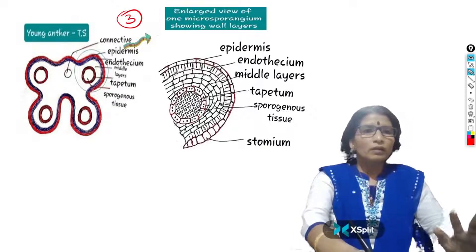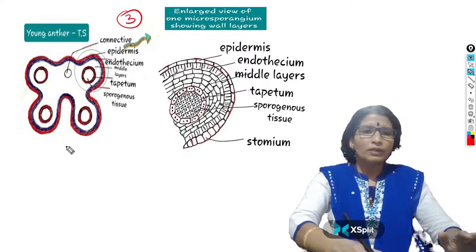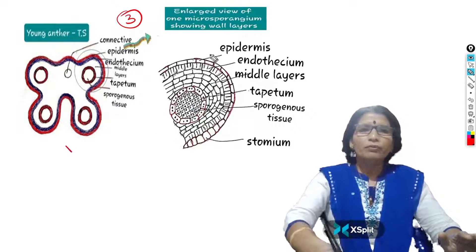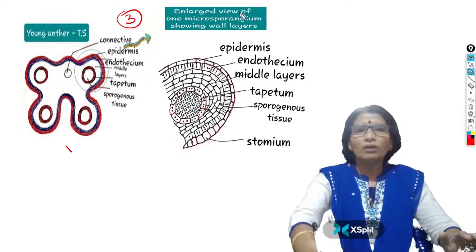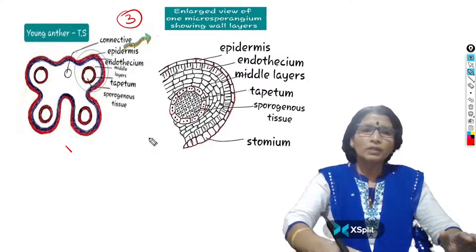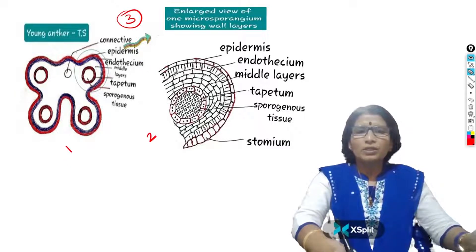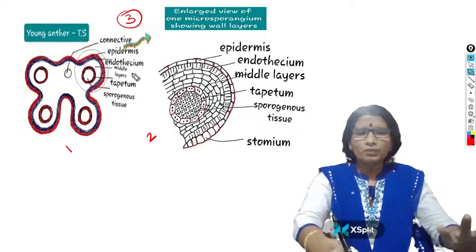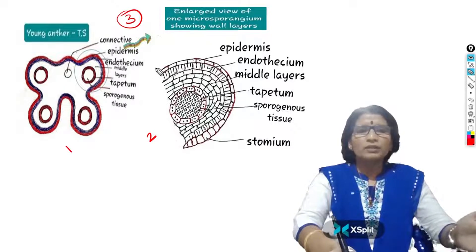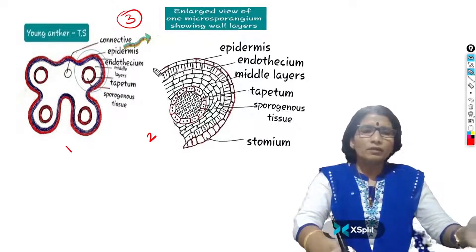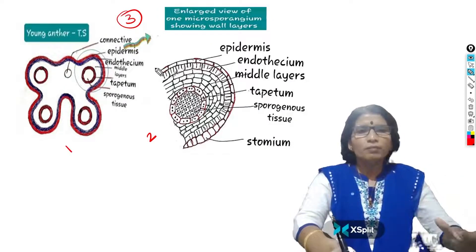If you draw the young anther, you will get 1 mark. If you draw the enlarged view of one microsporangium showing wall layers, you will get 2 marks. So to the description you will get 5 marks, to the diagrammatic representation you will get 3 marks. Just by drawing these diagrams and writing the description, easily and simply you can get 8 marks.